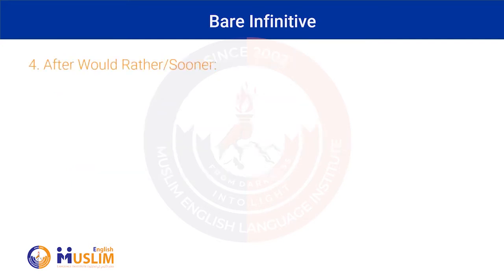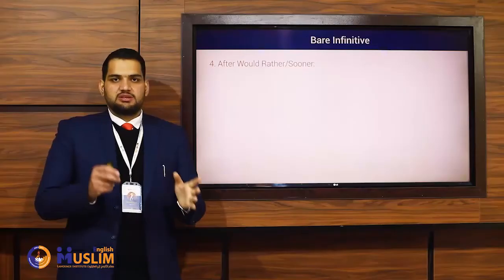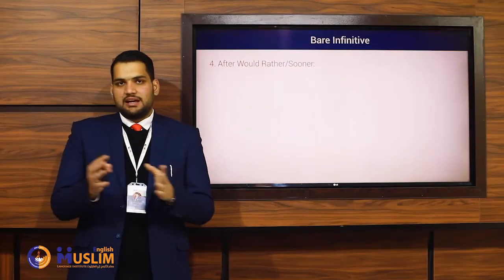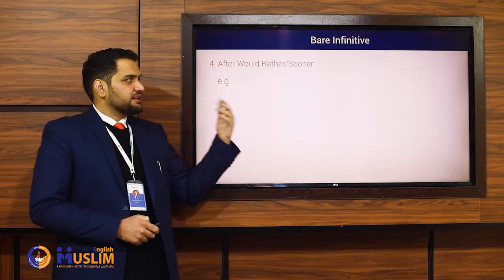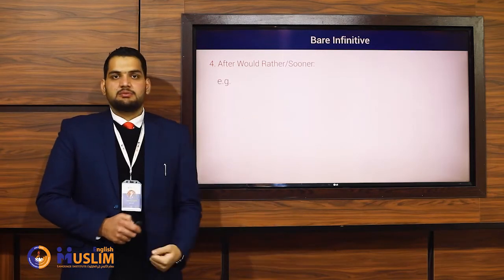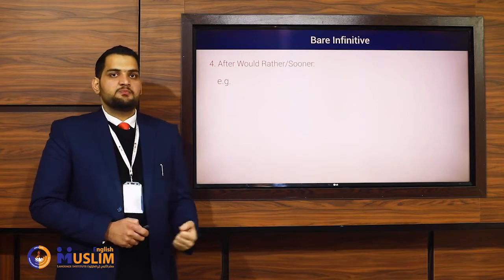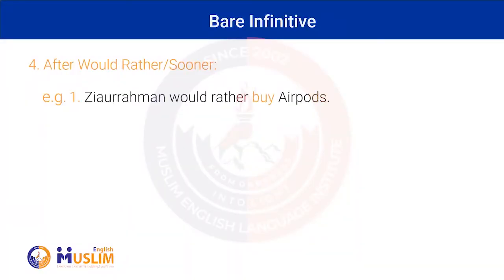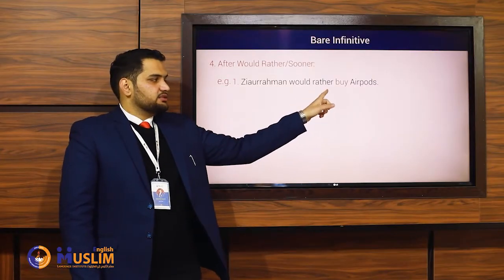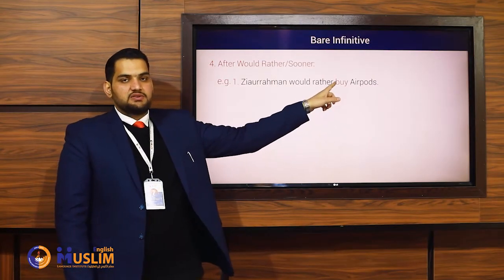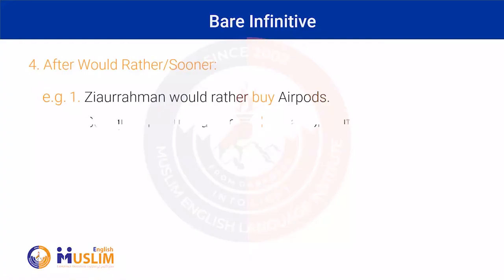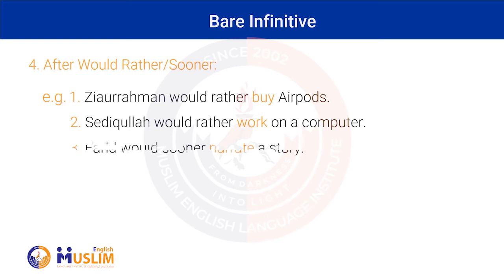The next use is after 'would rather' or 'would sooner.' These are specific expressions. After them, whenever we use the base form of a verb, that is known as bare infinitive. For example: 'Ziaul Rahman would rather buy airports' — here after 'would rather,' the base form is 'buy,' and that's known as bare infinitive. 'Ziaul Rahman would rather work on a computer.' 'Fareed would sooner narrate a story.'